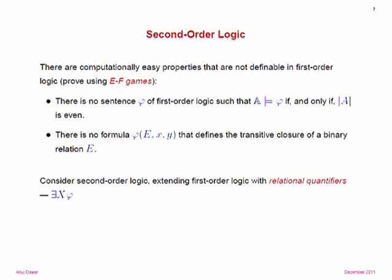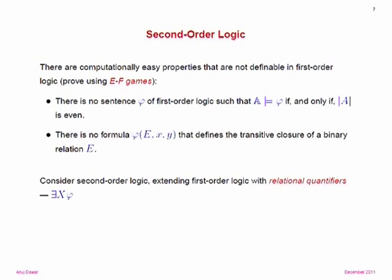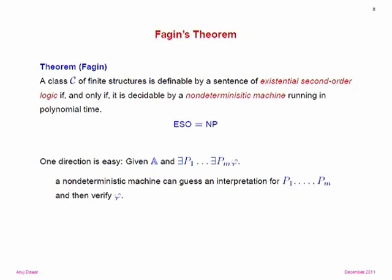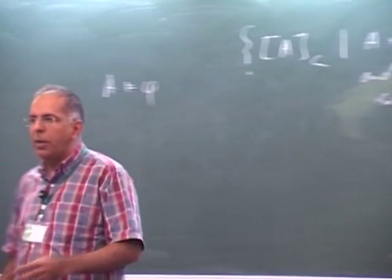So we move on to second-order logic, where we allow relational quantifiers — we allow ourselves to say things like 'there exists X phi' where X is now a relation symbol. This leads to Fagin's theorem, which tells us that if we allow just existential second-order quantifiers — existential second-order quantifiers in front of a first-order prefix — that gives us exactly the complexity class NP. A class of finite structures is definable by a sentence of existential second-order logic if and only if it's decidable by a non-deterministic polynomial time machine.